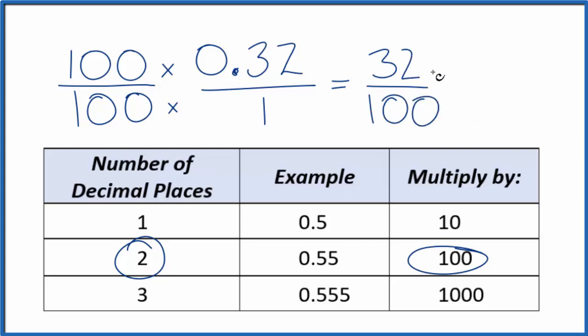I could reduce this down to simpler form. So 4 would go into 32 8 times. 4 times 8 is 32. And 4 would go into 100 25 times. So this would be the lowest form of the fraction for the decimal, 0.32.